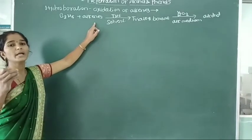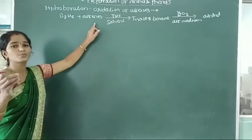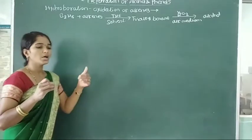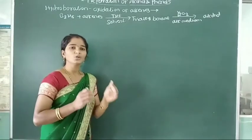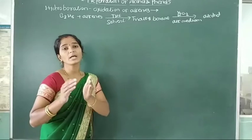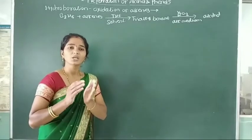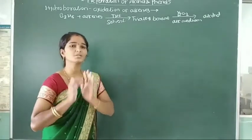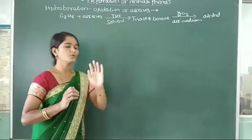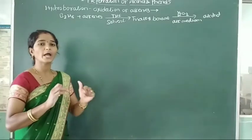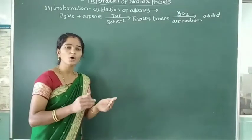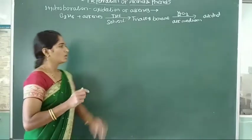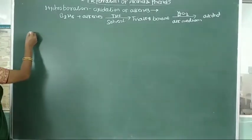Boron gets attached to the less substituted carbon. The less substituted carbon is the one with the maximum number of hydrogen atoms present. Therefore, this reaction is followed by anti-Markovnikov's rule, or it is called as the peroxide effect.